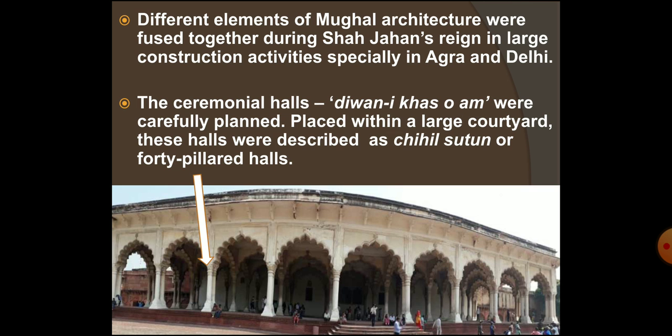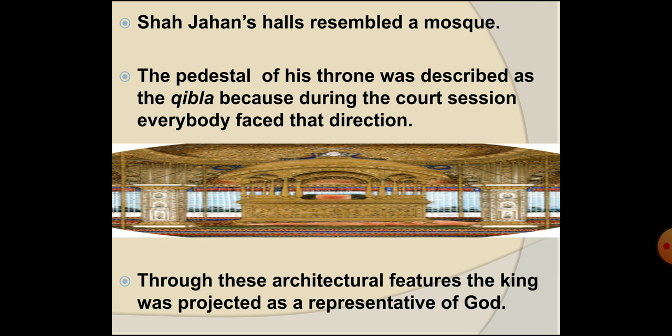These halls were called Diwan-i-Khas or Aam. These ceremonial halls or courts were built with careful planning and were placed within a large courtyard. These halls or courts were also described as chihil sutun, meaning 40-pillared halls.